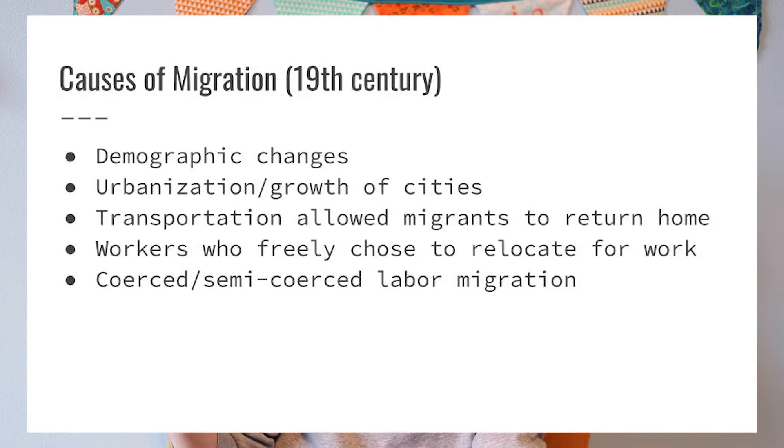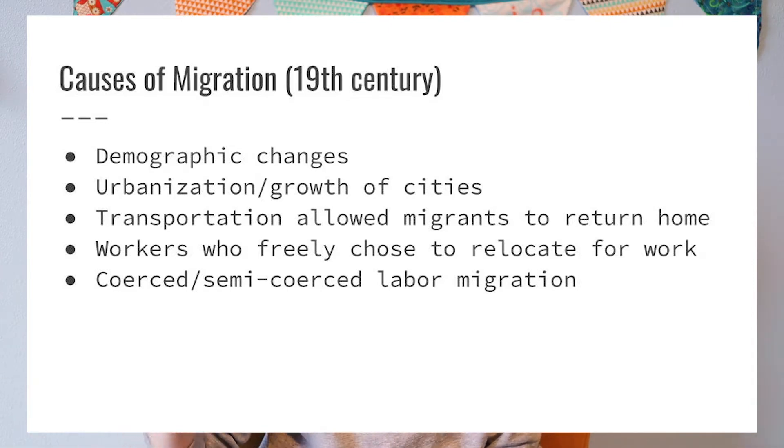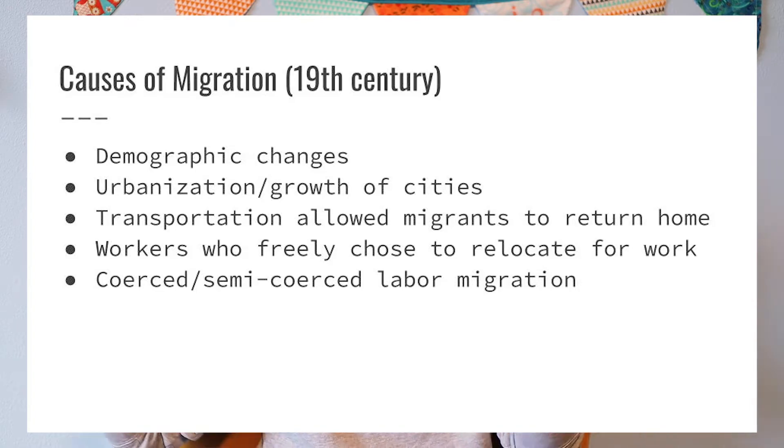So we have a lot of different reasons why people are migrating: population pressure, the rise and growth of cities, transportation making migration faster, easier, and not necessarily permanent. Some folks relocated of their own free will looking for opportunities to improve their lives, while others were coerced through contracts, enslavement, or legal penalties to migrate away from their homeland. With these causes in mind, let's turn to some of the effects or consequences of migration. Most migrants of the 19th century, whether temporary or permanent, were male — most migration was done for labor purposes performed by men.